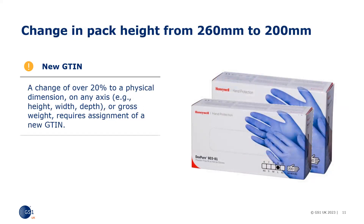A change of over 20% of physical dimension on any axis — e.g. height, width, depth — or gross weight requires assignment of a new GTIN at this packaging level, and all higher levels of the packaging hierarchy impacted shall have a new GTIN assigned. Cumulative changes in avoidance of the 20% threshold without changing the GTIN is an unacceptable practice. Trading partners should be notified about all dimensional changes, as cumulative changes might cause problems for trading partners and may obstruct the flow-through of products.